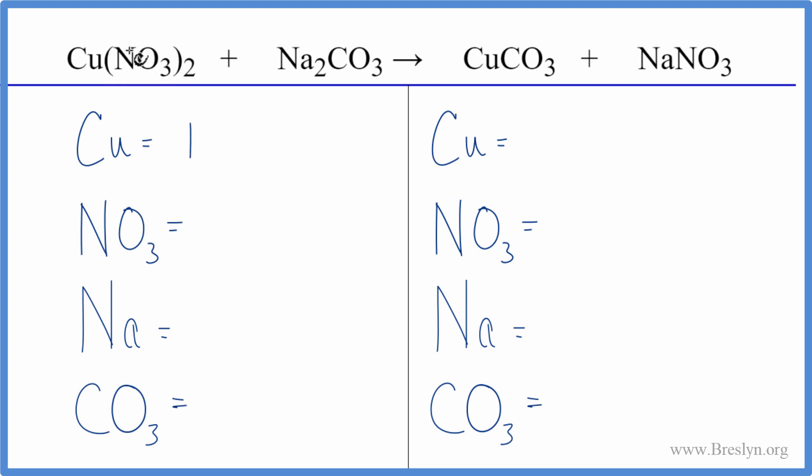we have one nitrate times two - two nitrates, two sodium atoms, and then the one carbonate ion here, the CO₃. On the product side, we have one copper, one nitrate, one sodium, and then one carbonate.